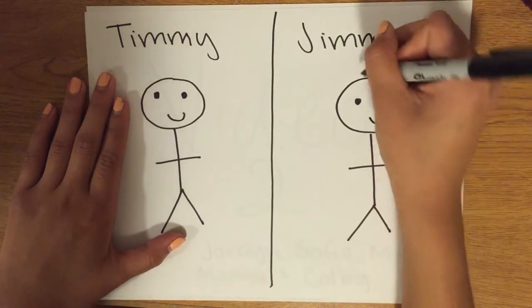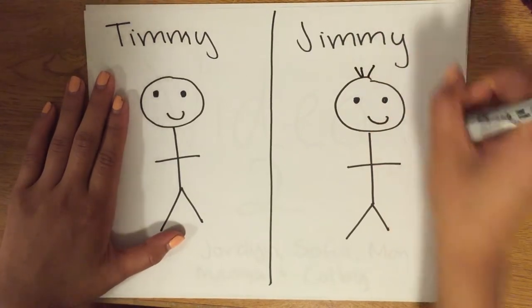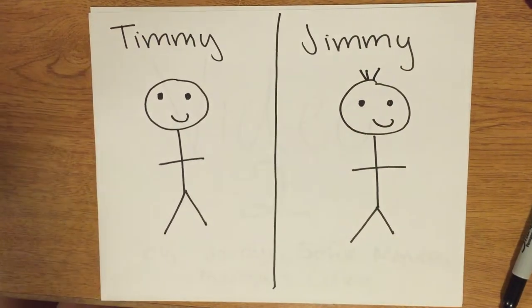Timmy lives in a poor neighborhood, and Jimmy lives in a nicer, more wealthy one.